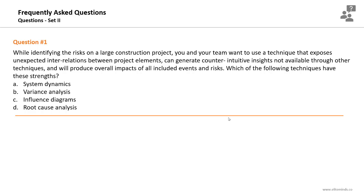Question number one in set two. While identifying the risks on a large construction project, you and your team want to use a technique that exposes unexpected interrelations between project elements. It can generate counter-intuitive insights not available through other techniques, and it will produce overall impacts of all included events and risks. Which of the following techniques have these strengths?